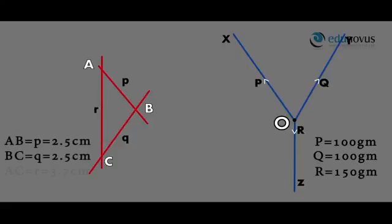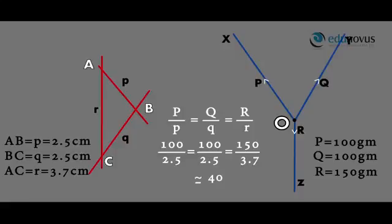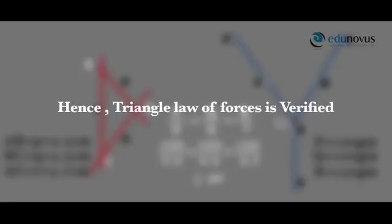The corresponding lengths of P, Q and R from the formed triangle ABC are: P is equal to 2.5 centimeters, Q is equal to 2.5 centimeters, R is equal to 3.7 centimeters. The values of P/p, Q/q and R/r are equal to 100/2.5, 100/2.5, and 150/3.7, which are all almost equal to 40. Hence, the triangle law of forces is verified.